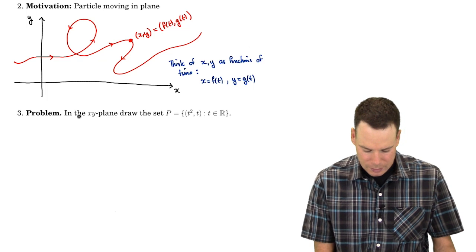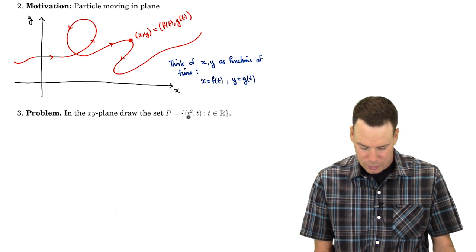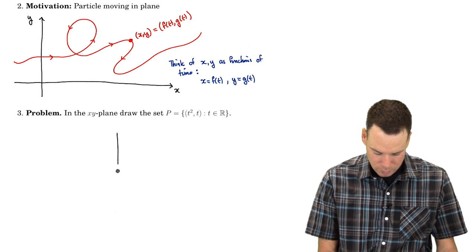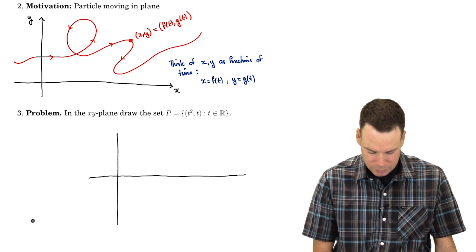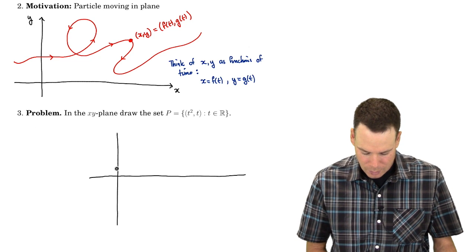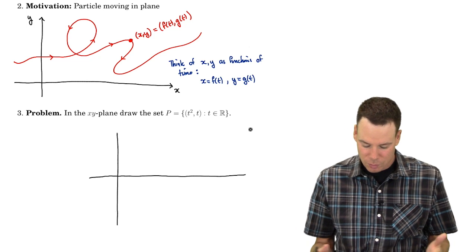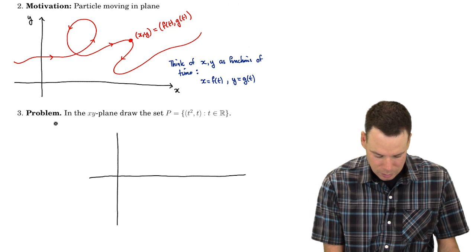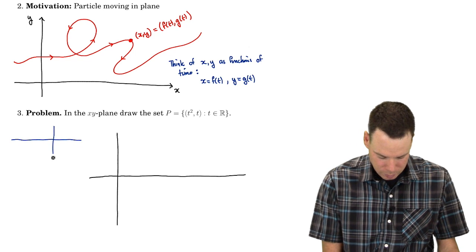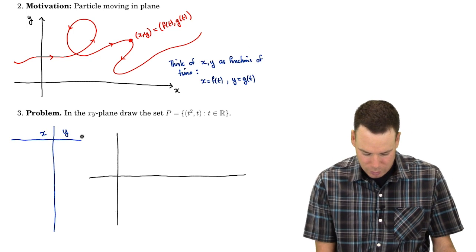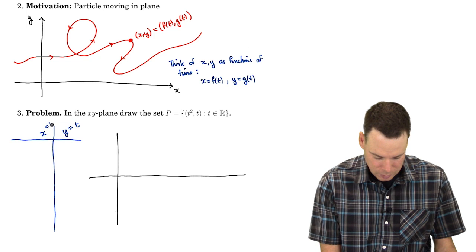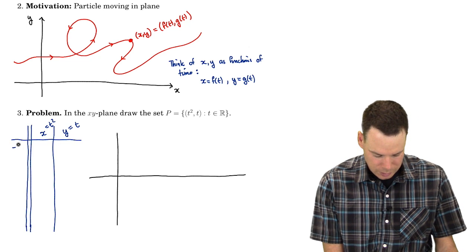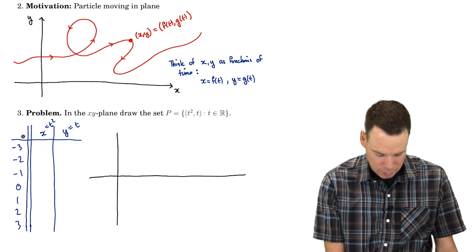So let's have a look at an example. In the xy plane, let's draw the set of all points where the x coordinate is given by t squared and the y coordinate is given by t, letting t run over all real numbers. I'm going to sketch this set of all points by going back to basic principles — I'll just pick some points and then connect them. I'll pick some t values that are easy to plot: negative 3, negative 2, negative 1, 0, 1, 2, and 3.